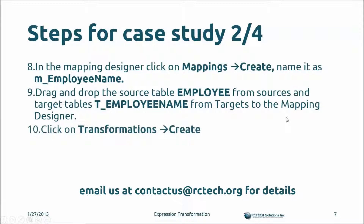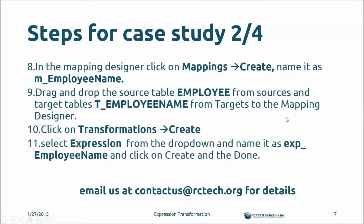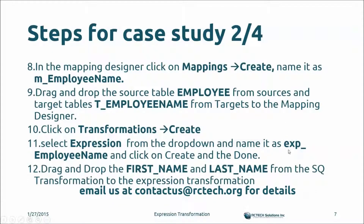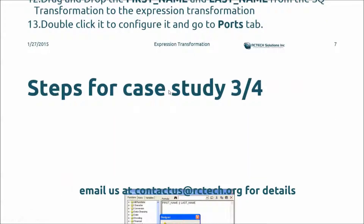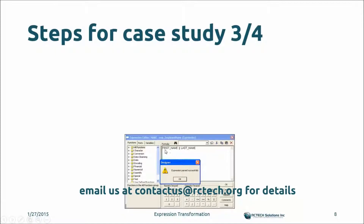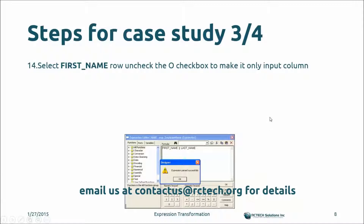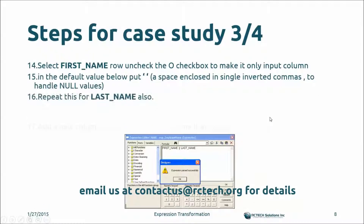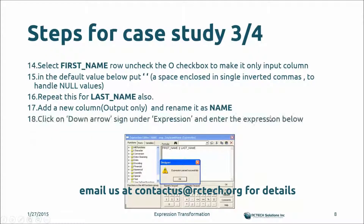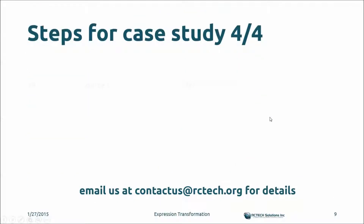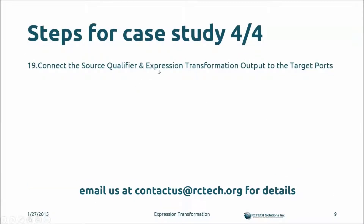To recap: drag and drop the employees table, create the expression transformation named 'exp_' following the naming convention, drag the first and last name columns from the source qualifier, double-click to configure the port, add the full name field with the concatenation formula, validate it, and connect the expression transformation output to the target ports.